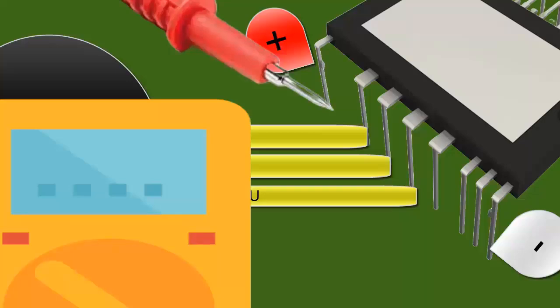Place the black probe of the multimeter on the negative power supply of the IPM electronic circuit.